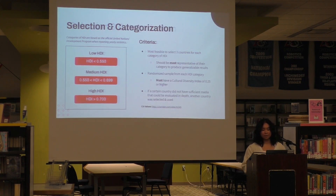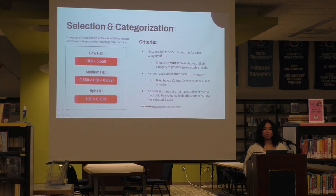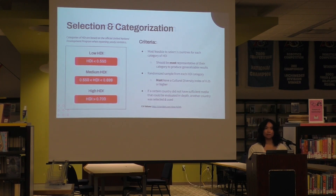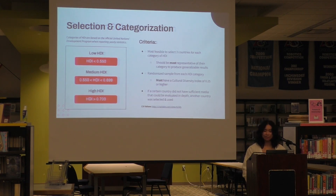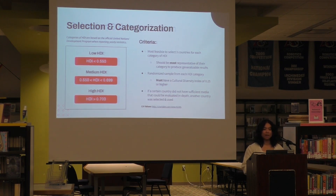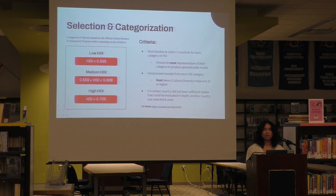I took these case studies and articles and tied them to specific HDI measures of a country. My selection process categorized countries into low HDI, medium HDI, and high HDI as indicated by their specific values. I selected three different countries for each category, wanting them to be most representative of that category from a randomized sample. To further ensure representativeness, each country had to have a cultural diversity index of 0.25 or higher. If a certain country didn't have sufficient media or wasn't well represented in global media, I chose another country.